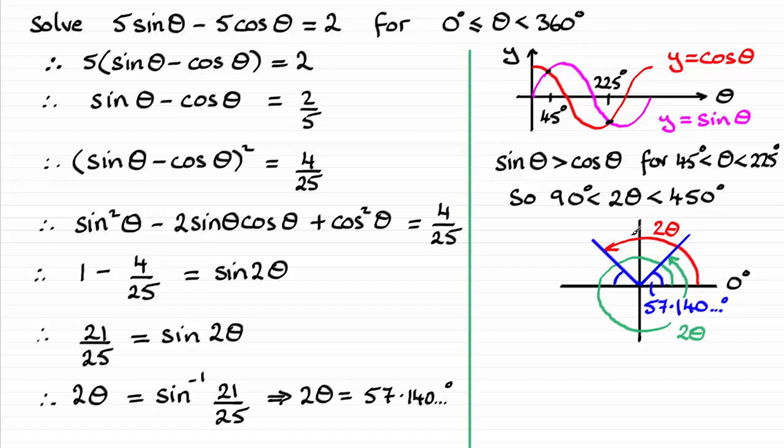So we don't need to go around anymore, not to this blue line here. We've just got these two solutions for 2θ. So what are those values?